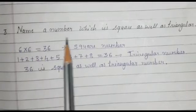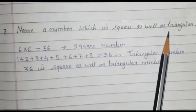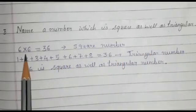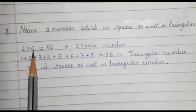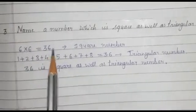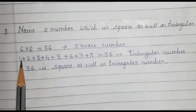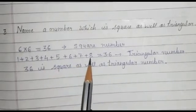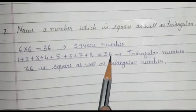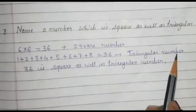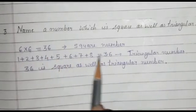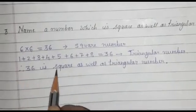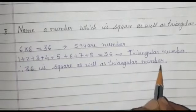Question number 3: Name a number which is square as well as triangular. 6×6=36, so 36 is a square number. And 1+2+3+4+5+6+7+8=36, so 36 is also a triangular number. It means 36 is both a square number and a triangular number.